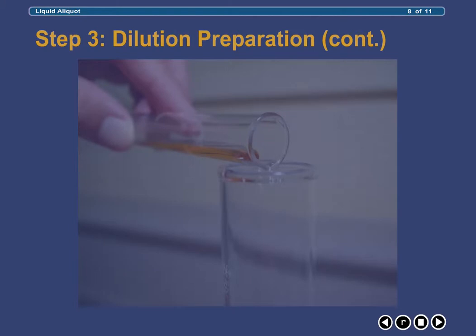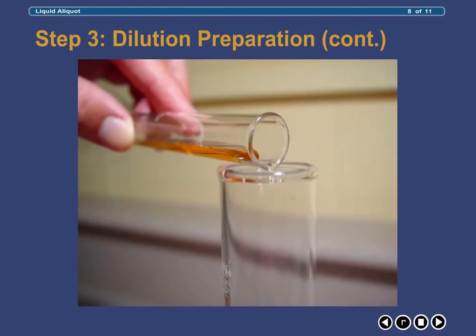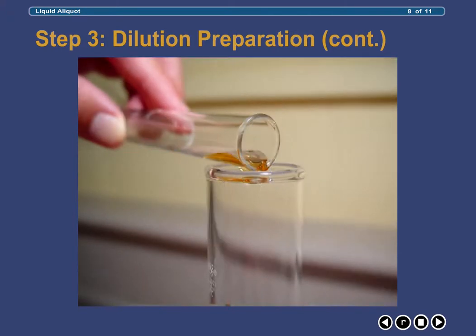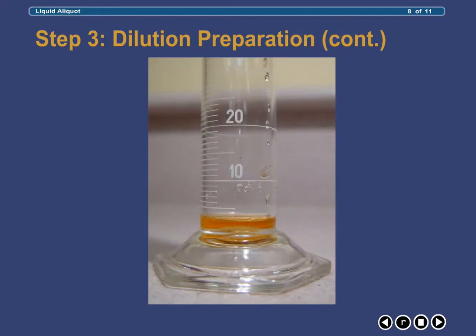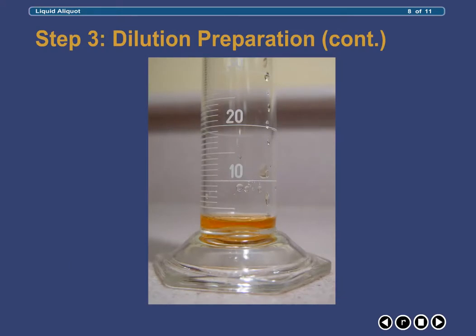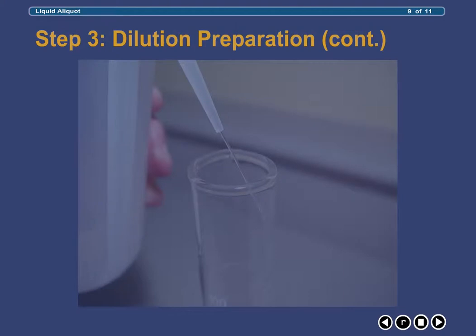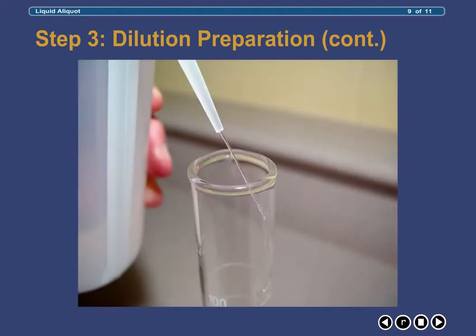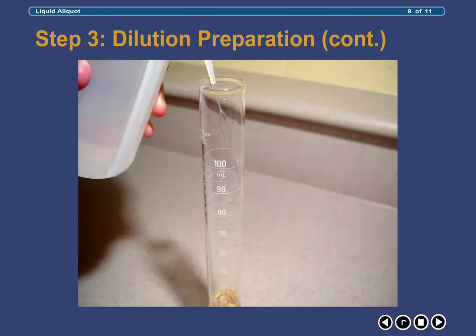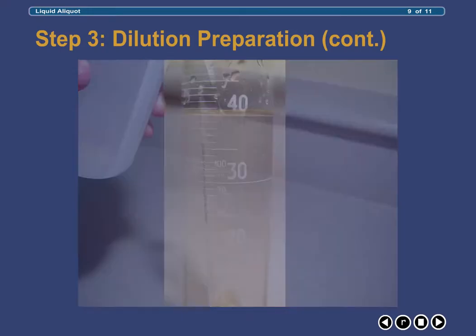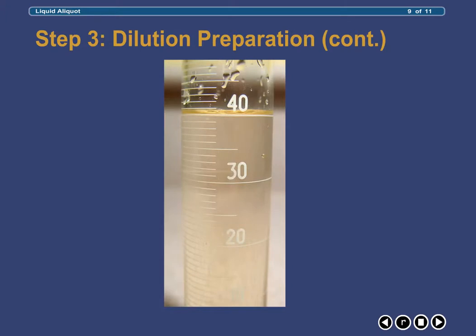We now prepare the dilution by first transferring the 2 milliliters of Preservative A from the 10 milliliter graduated cylinder to a 100 milliliter graduated cylinder. Next, we QS this 2 milliliters of the Preservative A solution to a total volume of 40 milliliters using distilled water. Once mixed, we now have 40 milliliters of a Preservative A dilution concentrated at 10 milligrams per milliliter.